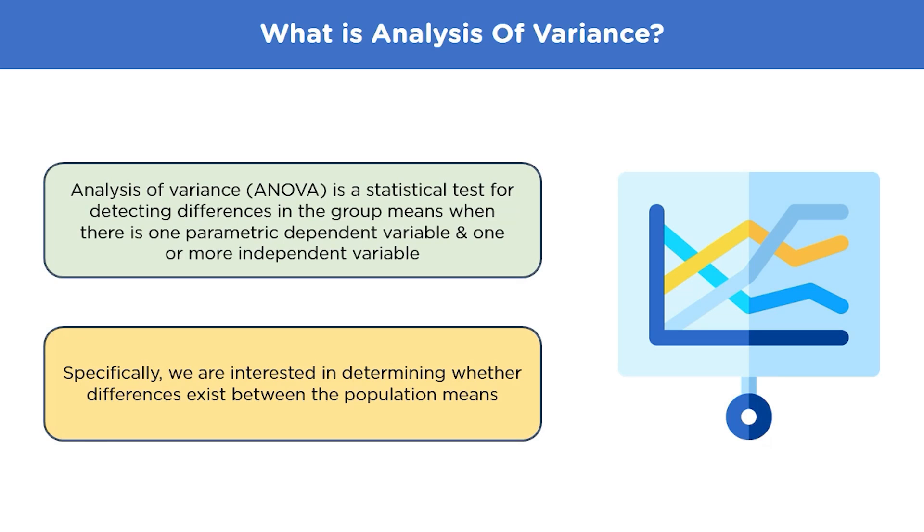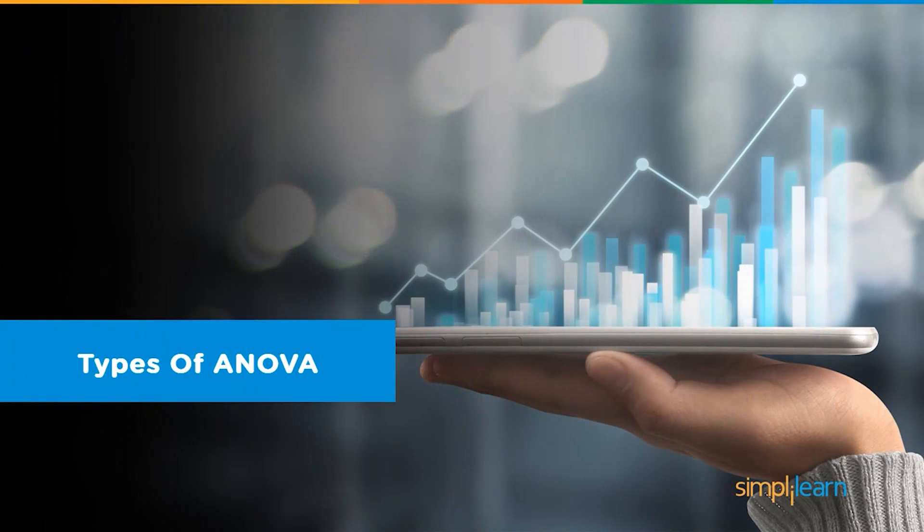Analyzing the variance tests the hypothesis that the means of two or more populations are equal. In a regression study, analysts use the ANOVA test to determine the impact of independent variables onto the dependent variable. So, what are its types?